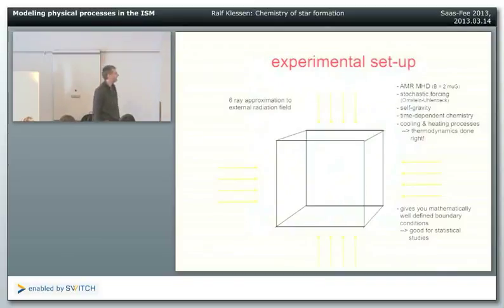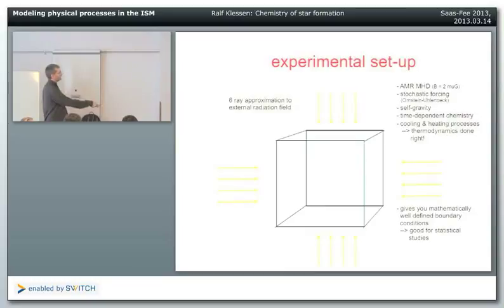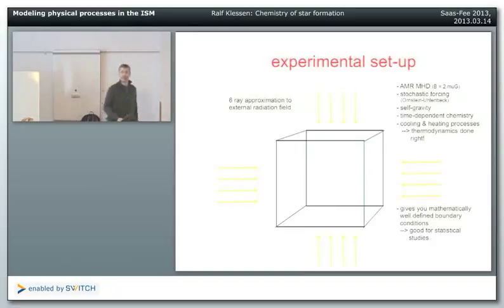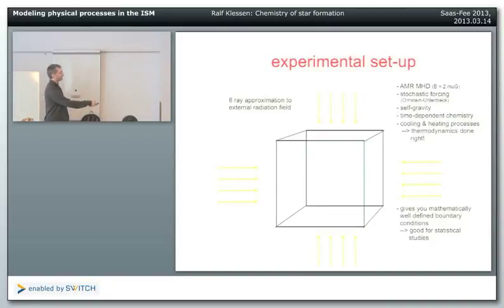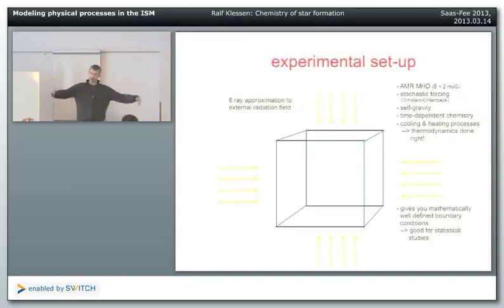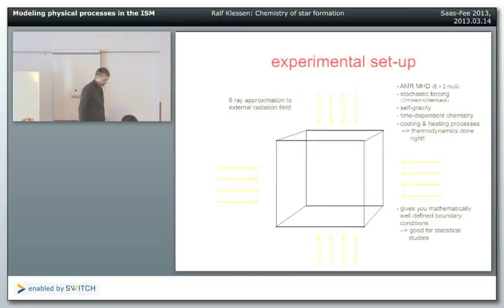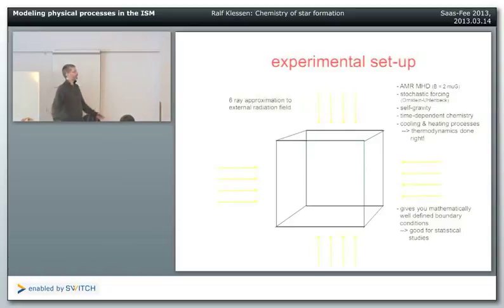The setup I'll discuss has a box with the interstellar radiation field shining in from outside. I will not include self-gravity today, so there is no star formation and no internal radiation sources - only attenuation of the external radiation field. I shake the box with turbulent driving schemes discussed yesterday and add time-dependent chemistry, then see how the gas behaves as I change chemical composition, density, ambient radiation field, cosmic ray flux, and so on.